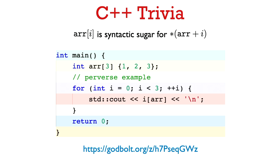The bracket notation arr[i] is really just syntactic sugar for dereferencing arr + i. And here's a funny piece of C++ trivia — I'm not suggesting you'd ever write code this way, but since addition commutes, you can even write i[arr] in the loop, because that stands for dereferencing i + arr, which is the same as arr + i, giving us the memory address of the ith element. So this example really shows you that the bracket notation is syntactic sugar for dereferencing arr + i.